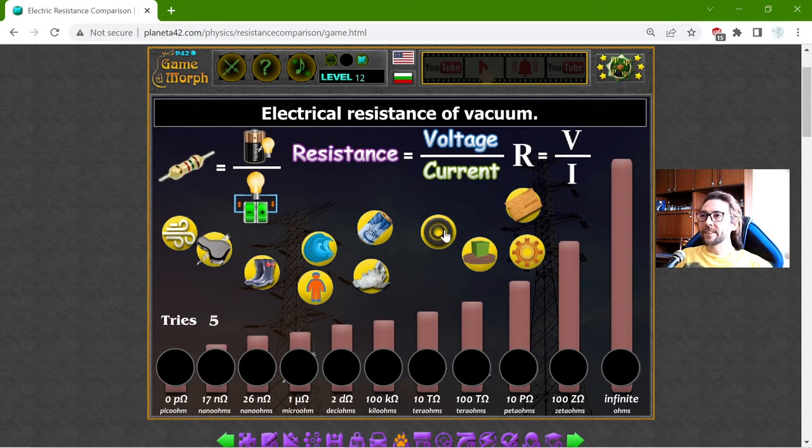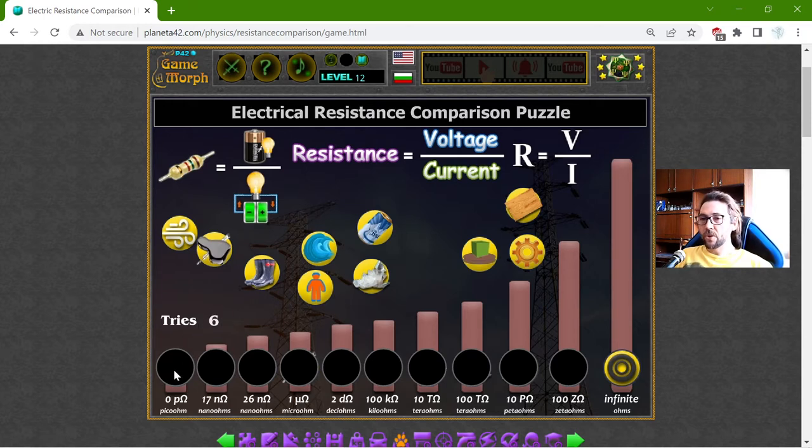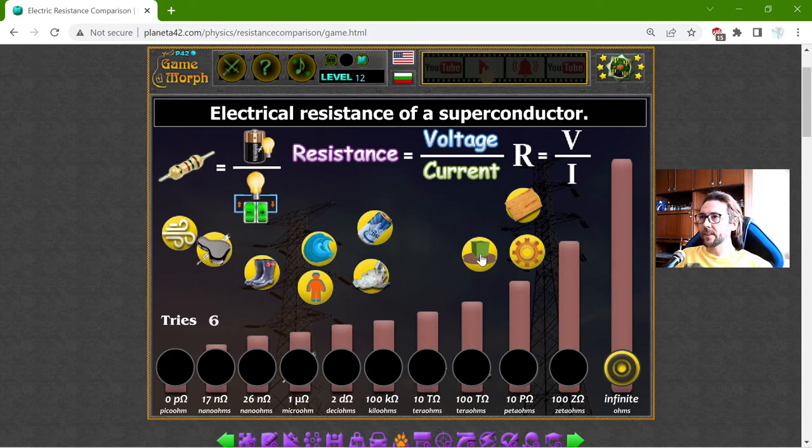That should be the electrical resistance of the vacuum. So, in general, in vacuum, it is understandable. The electrons just cannot go through anywhere in the vacuum because there is nothing there. And the object with no resistance should be the superconductor.